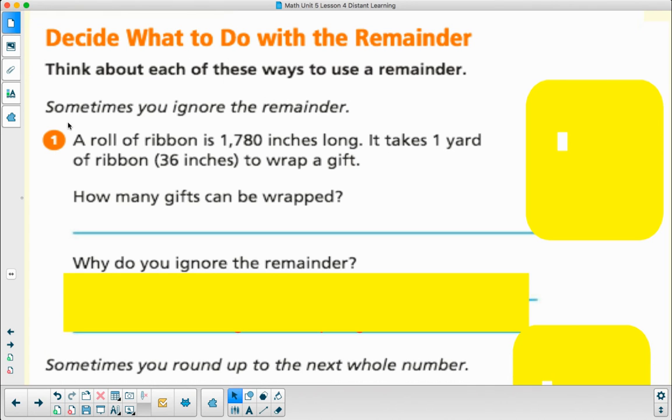In number one, they say sometimes you ignore the remainder. A roll of ribbon is 1,780 inches long. It takes one yard of ribbon, which is 36 inches, to wrap a gift. Find out how many gifts can be wrapped and why do you ignore the remainder.